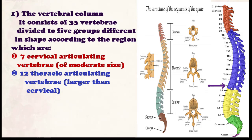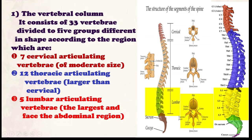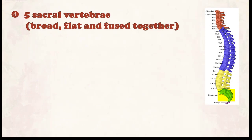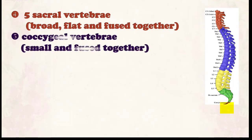Number three: the lumbar vertebrae. Their properties are that they are articulating, the largest vertebrae, and they exist in the abdominal region. Their number is five. Number four: five sacral vertebrae, which are flat and fused together. Although there are five sacral vertebrae, they are considered as one bone because they are joined together and act as one vertebra.